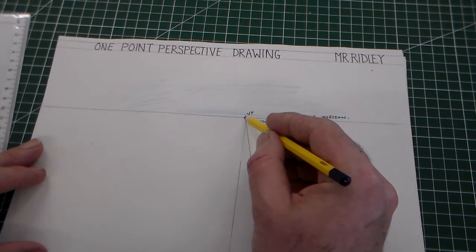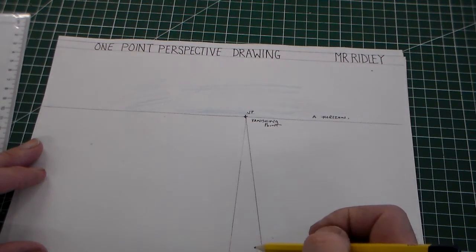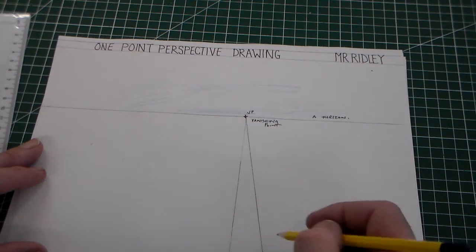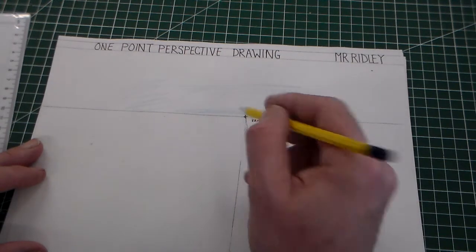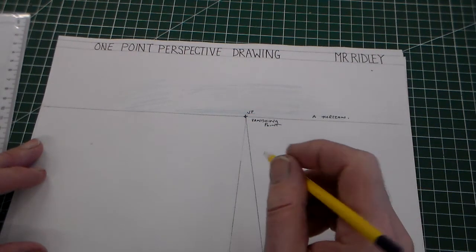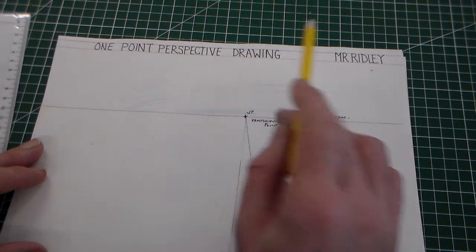So if we take any other point and draw a line, it will end up at the vanishing point. And that gives us this image of perspective which we call one point perspective drawing.